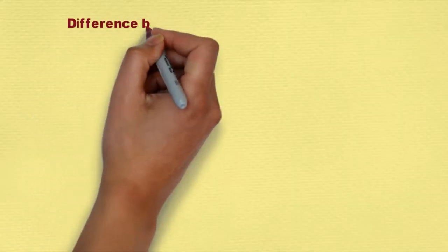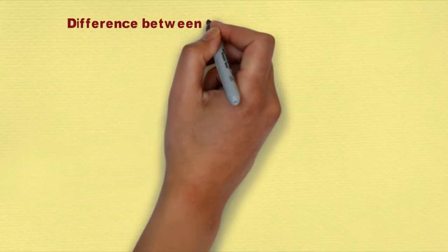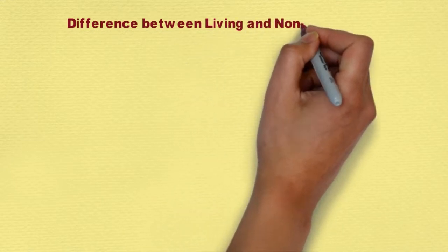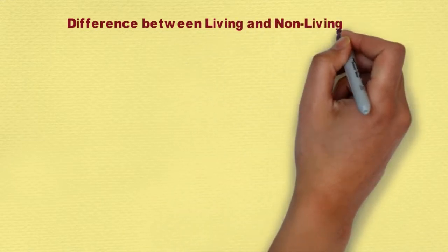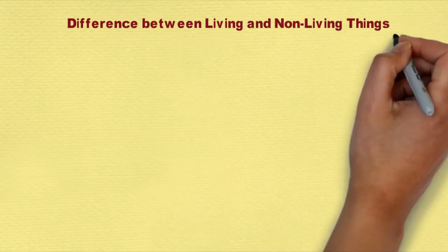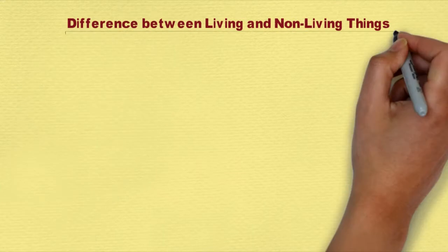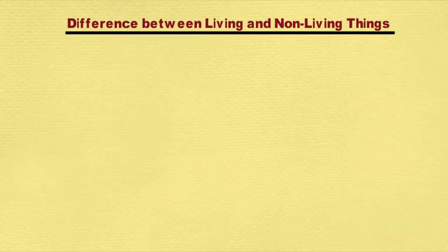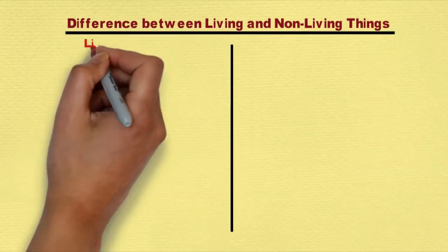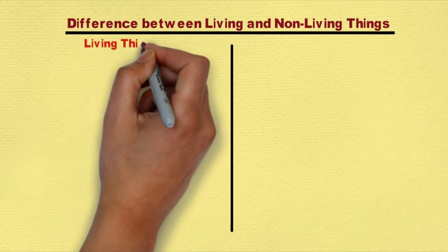Today we will study about the difference between living things and non-living things. Living things are made up of cells. Non-living things lack cellular structure.